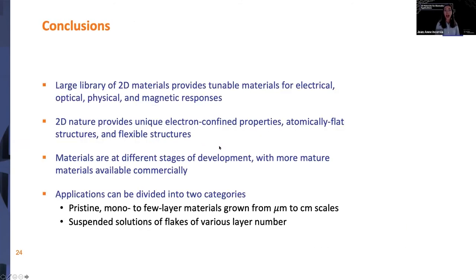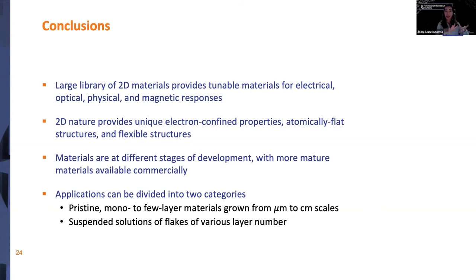In conclusion, there is a large library of 2D materials providing tunable materials for electrical, optical, physical, and magnetic responses, with many applications in biomedicine. What the 2D nature provides is unique electron-confined properties, atomically flat structures, and flexible structures. Materials in this library are at very different stages of development, with more mature materials available commercially. Applications can be divided into two categories: pristine mono-to-few layer materials grown at wafer scale, finding applications in electronics; and suspended solution flakes with various layer numbers, finding applications more in the chemical and biomedical space.